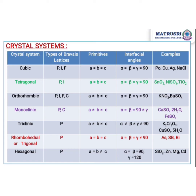In orthorhombic, all lattice parameters are unequal: a ≠ b ≠ c, but alpha = beta = gamma = 90°. Similarly, you can find the parameter conditions for monoclinic, triclinic, rhombohedral, and hexagonal systems in the table.